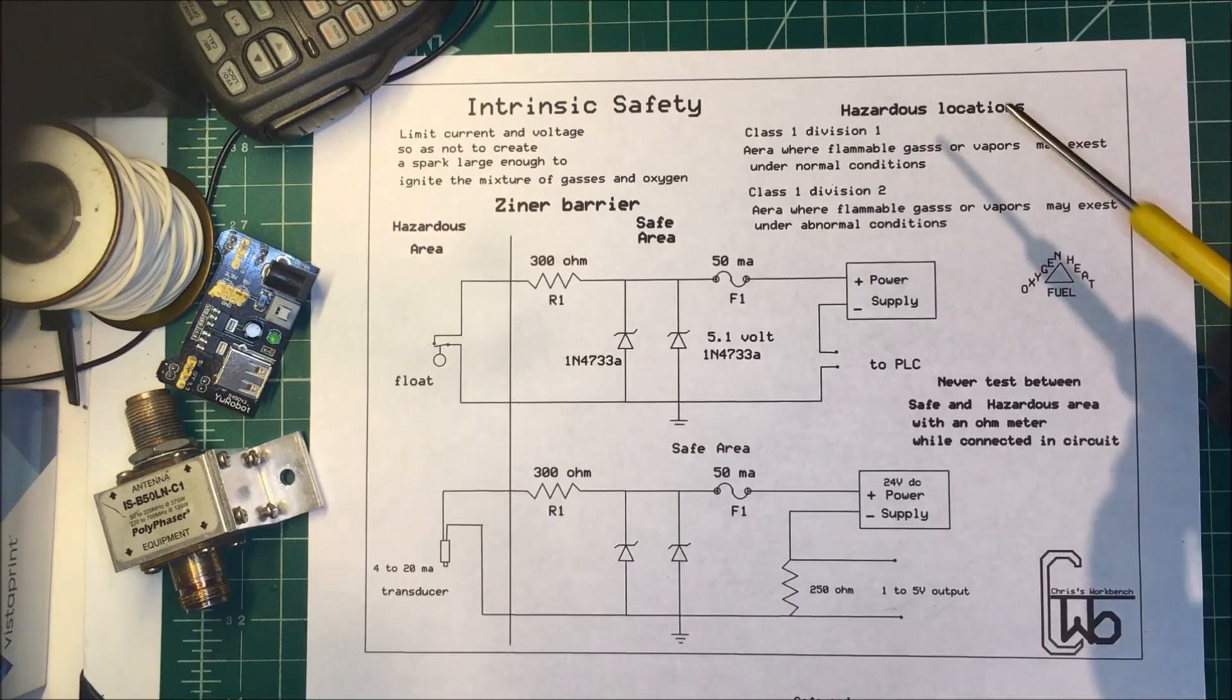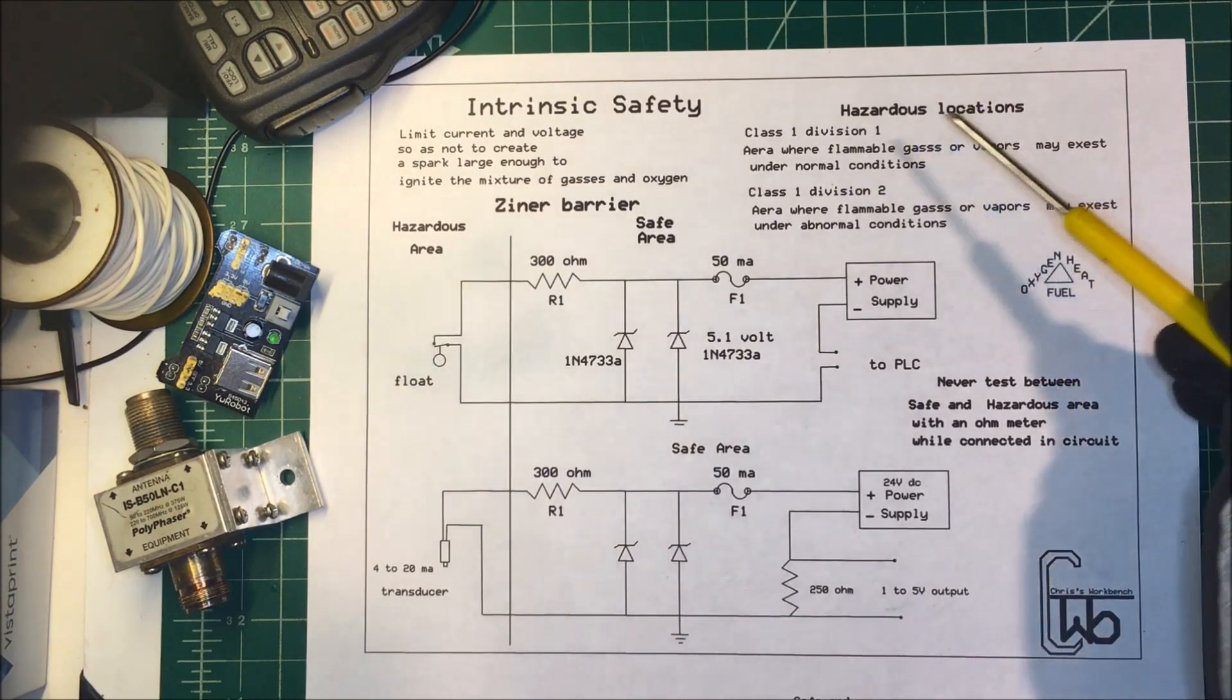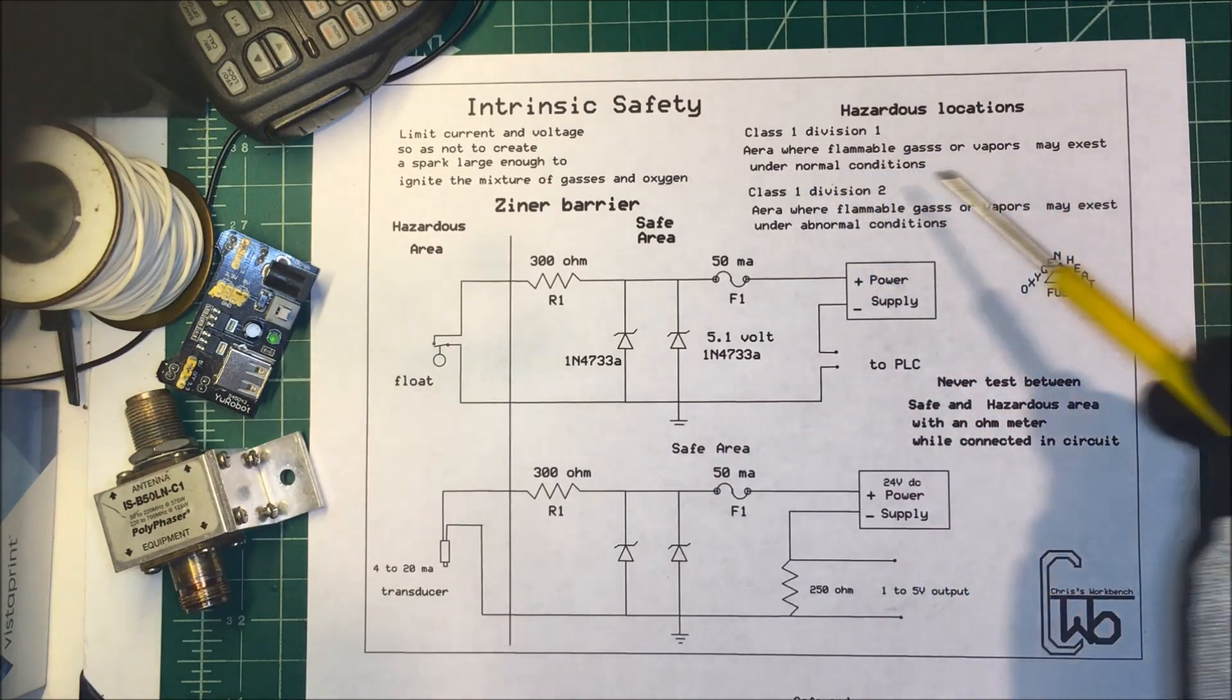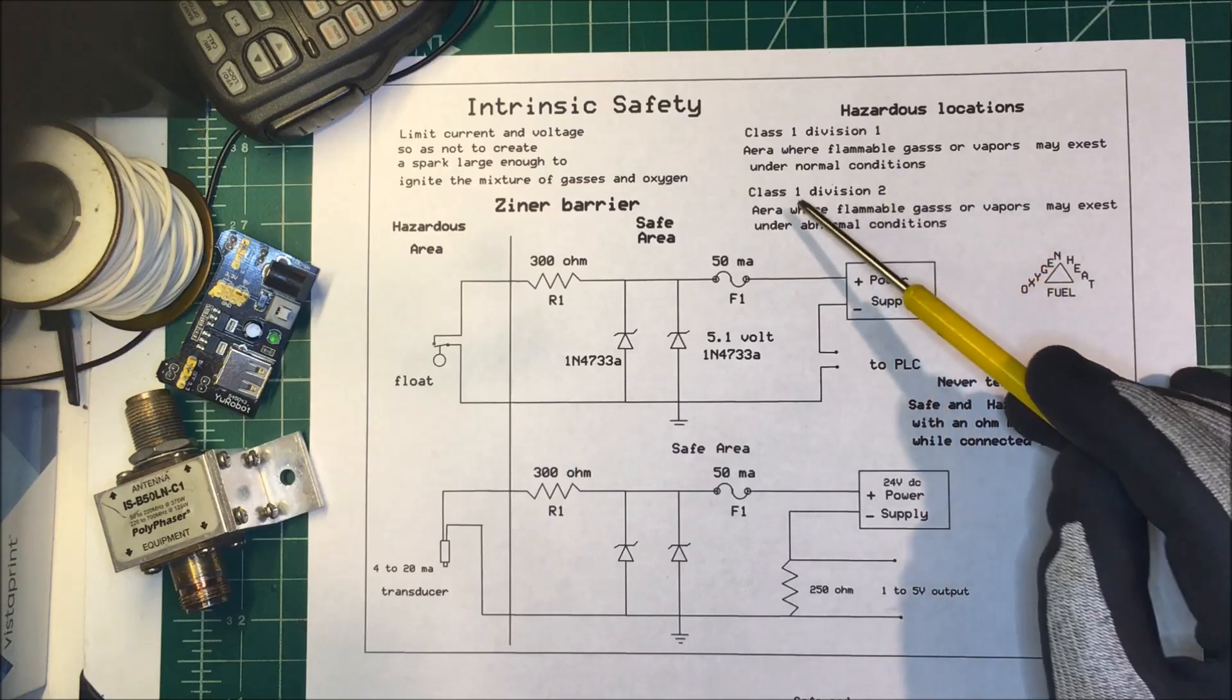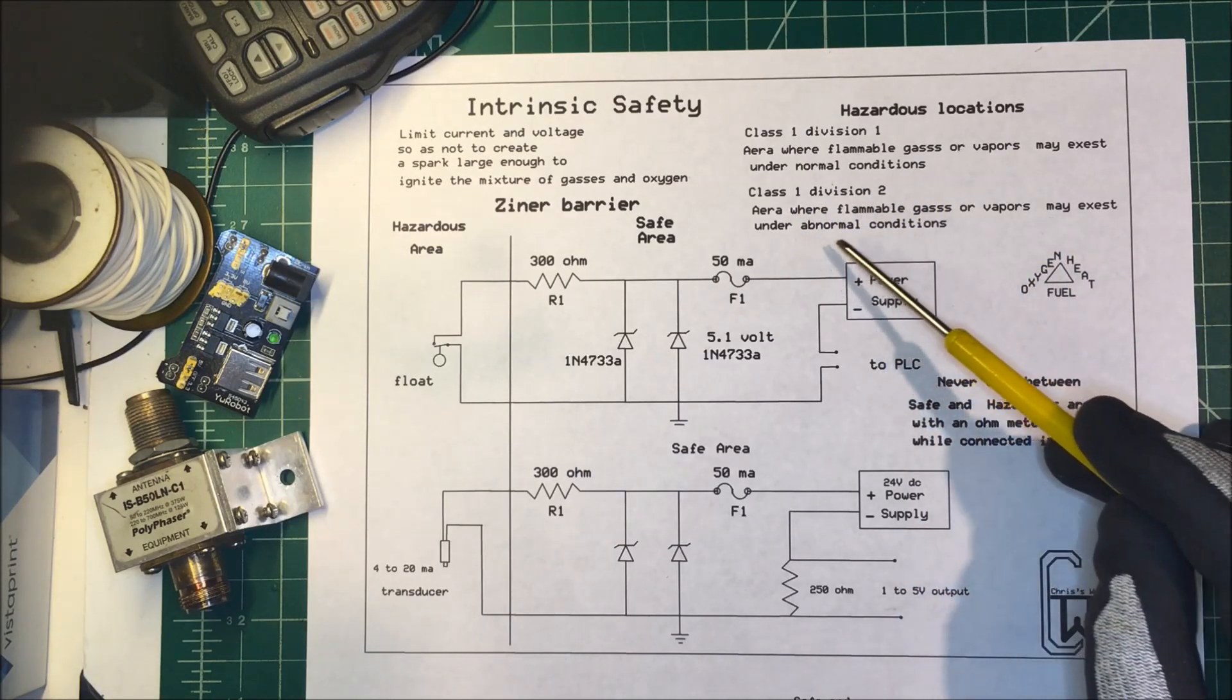Let's talk about intrinsic safety. The National Electric Code classifies hazardous locations. Class 1 Division 1 is an area where gases and vapors may exist under normal conditions, and Class 1 Division 2 is an area where flammable gases or vapors may exist under abnormal conditions.